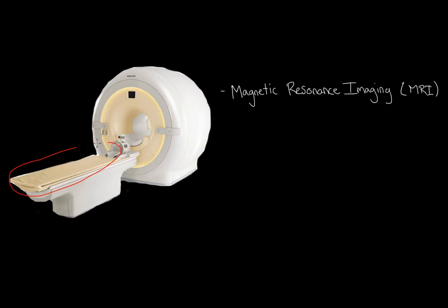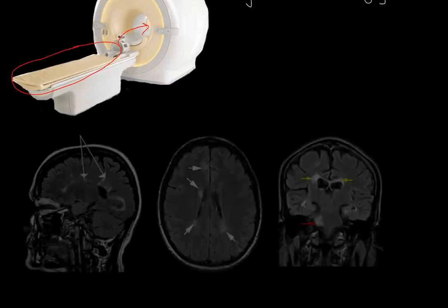So what you do is you have someone lay down on this bed, and they enter this kind of cramped and really loud machine. That machine is actually going to take pictures of their brain. Interestingly enough, it's actually going to take pictures from three different perspectives.